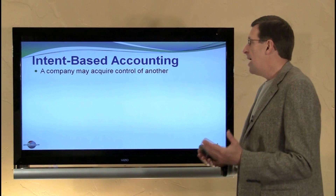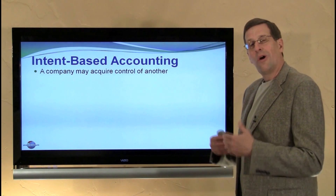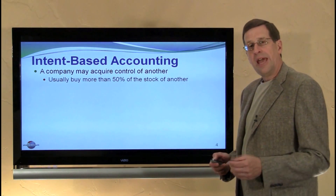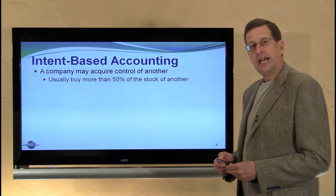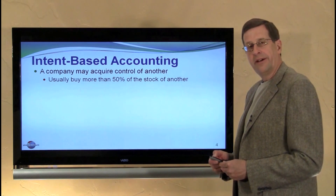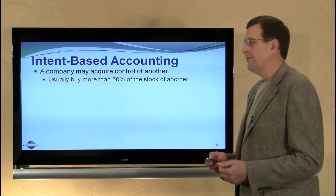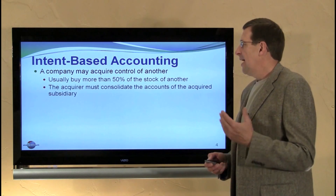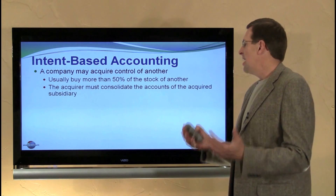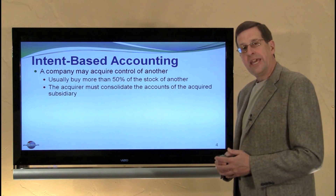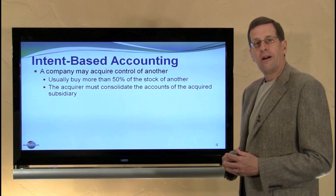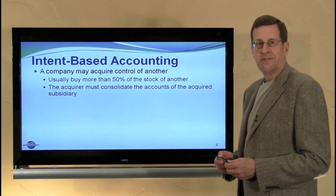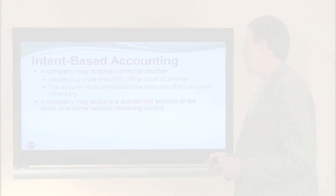A company might make an investment with the intent of acquiring control over another company. That usually happens when a company buys more than 50% of the stock of another company with the intent of holding it on a continuing basis. In that case, the acquirer must consolidate all of the accounts of the subsidiary into the acquirer's books — this is termed consolidation, and it's the subject of a subsequent module in this chapter.